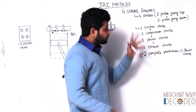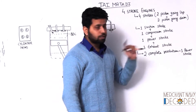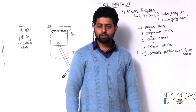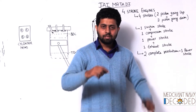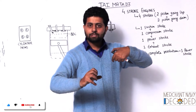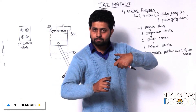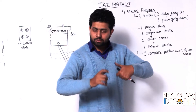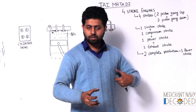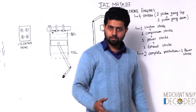When I talk about four-stroke engines, the crankshaft has two revolutions but the camshaft has one revolution. When the crankshaft has two revolutions, the camshaft has one revolution. So there might be a gear in between which changes the speed of both. The ratio will be two is to one.